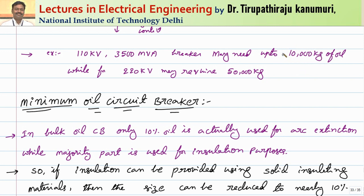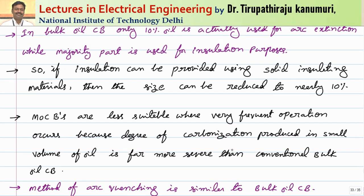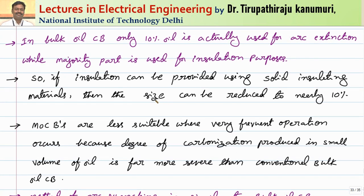They observed practically that out of the total quantity of oil, only 10 percent — nearly 1,000 kgs — is actually used for arc extinction purposes, while the majority of the oil is used for insulation only. Because the tank is made of iron, to insulate between the iron parts and the live contacts, the majority of the oil is spent.